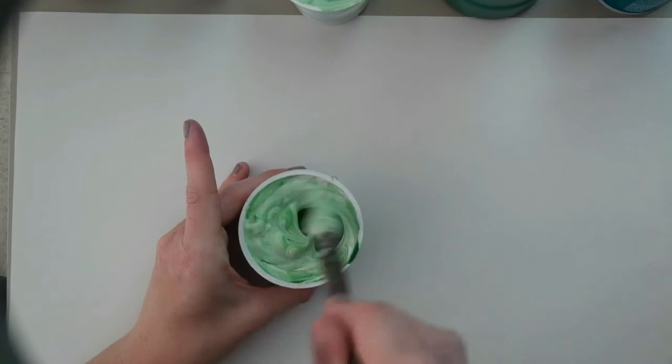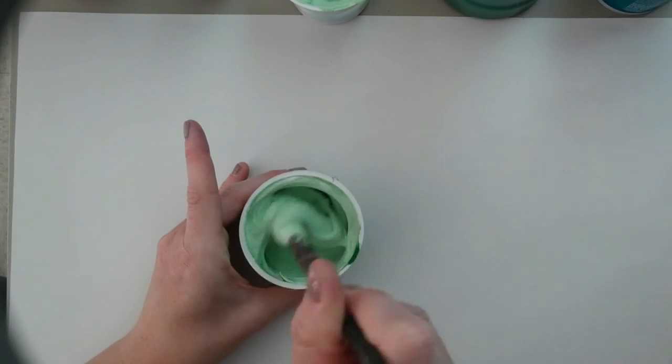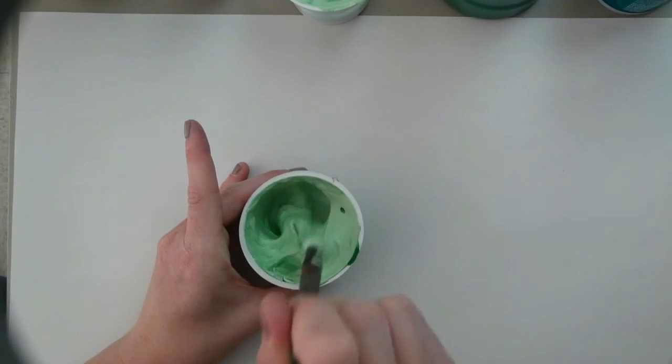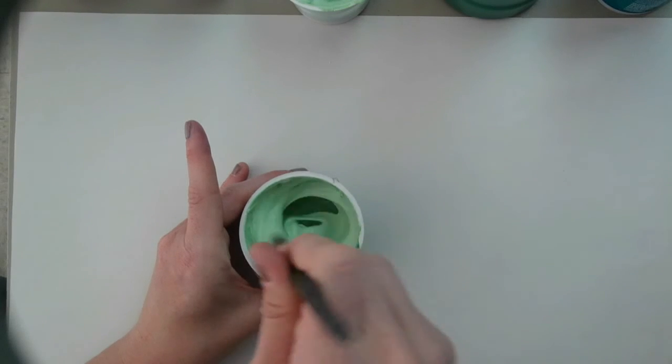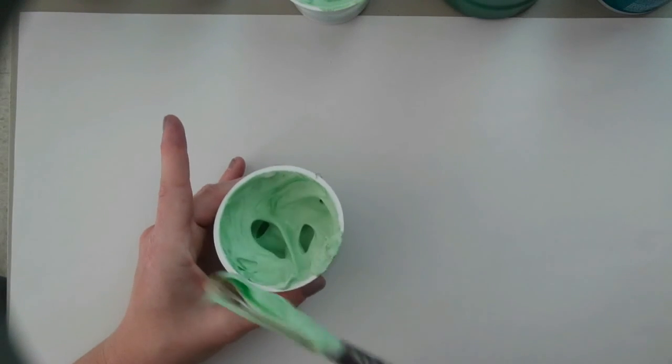The puffy paint is what we're going to use to decorate and paint our planet. If you have shaving cream, glue, and paint at home, you can make this puffy paint and it's a lot of fun to work with.